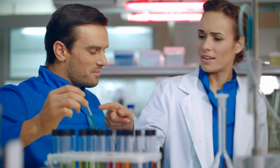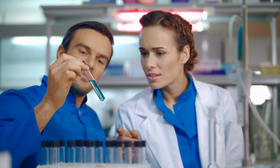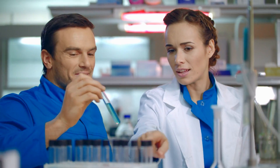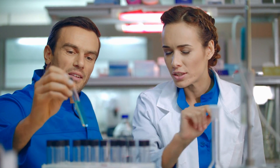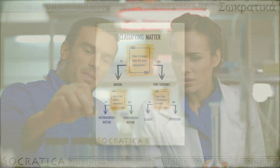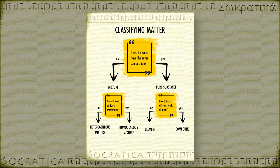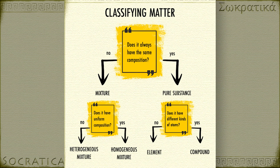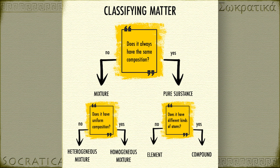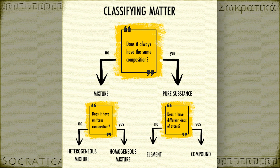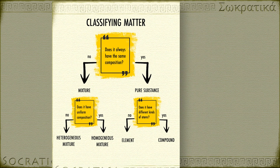The more pure a sample of matter is, the better we can predict how it will behave based on chemical principles. This is one reason why chemists classify matter based on how pure a sample it is. Here's the basic flowchart chemists refer to when classifying matter. You can find this in your textbook, but we've made a free handout you can use when solving these kinds of problems.